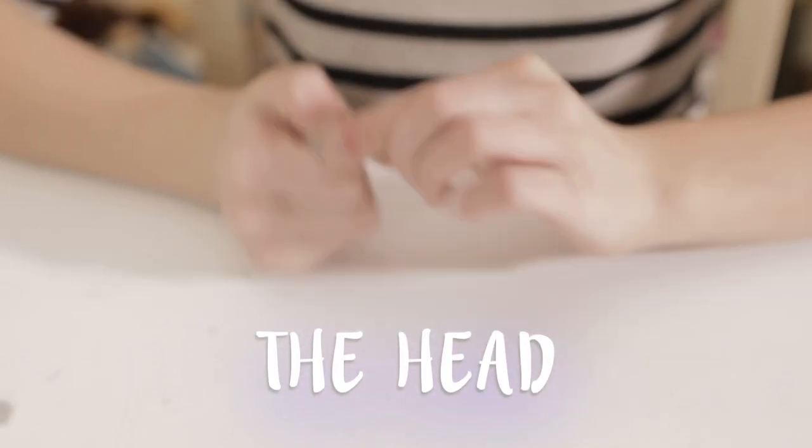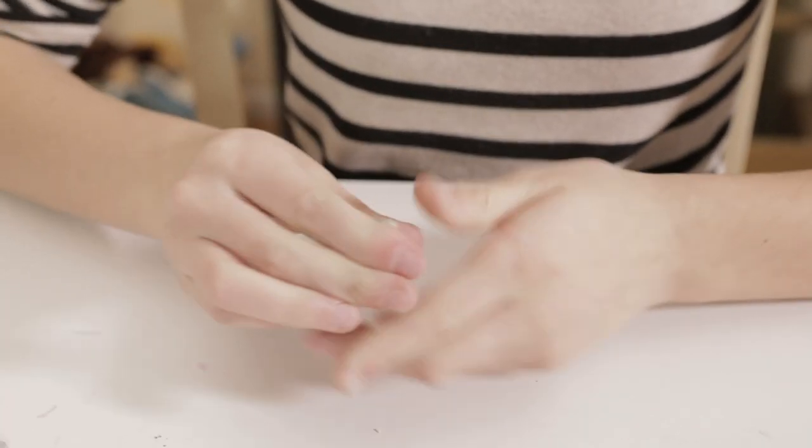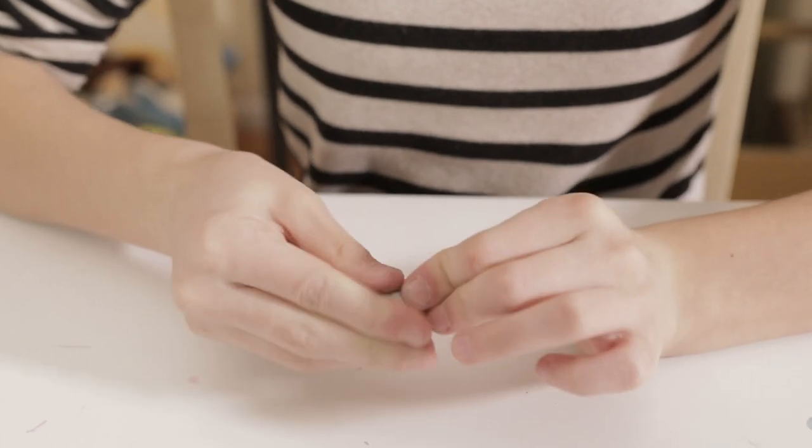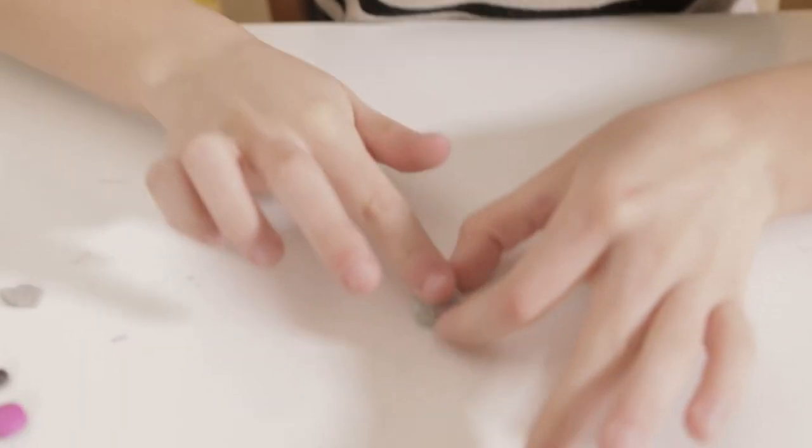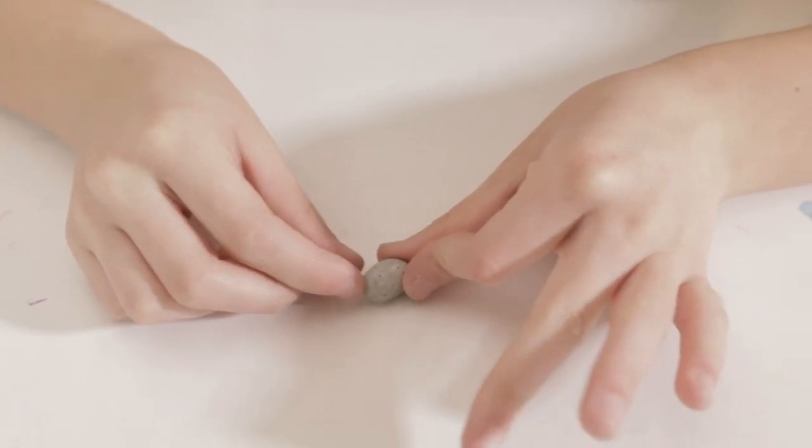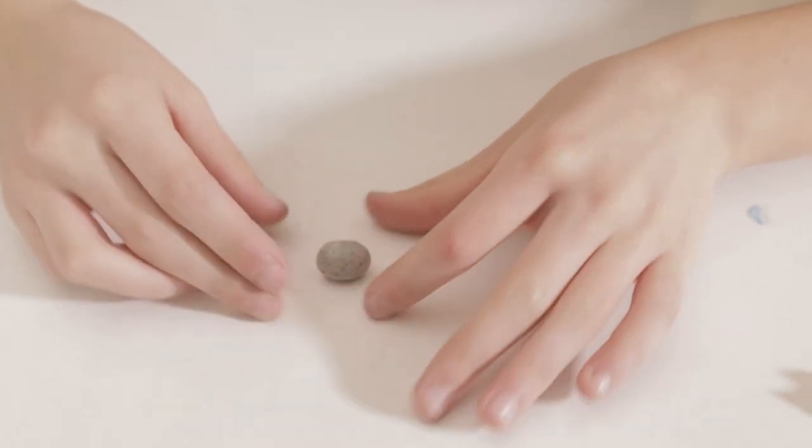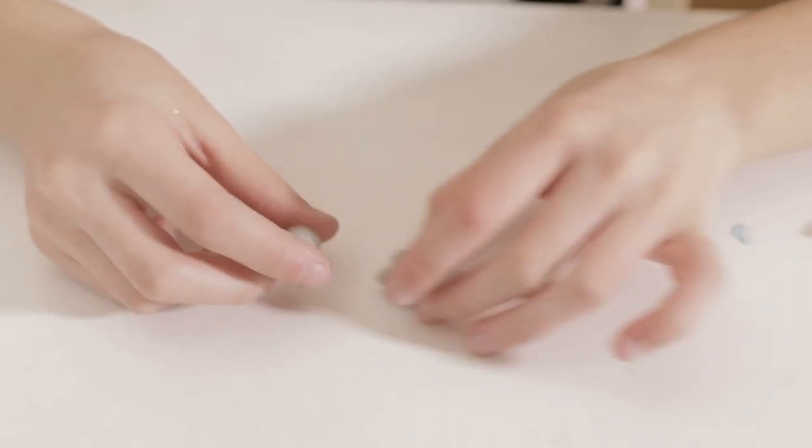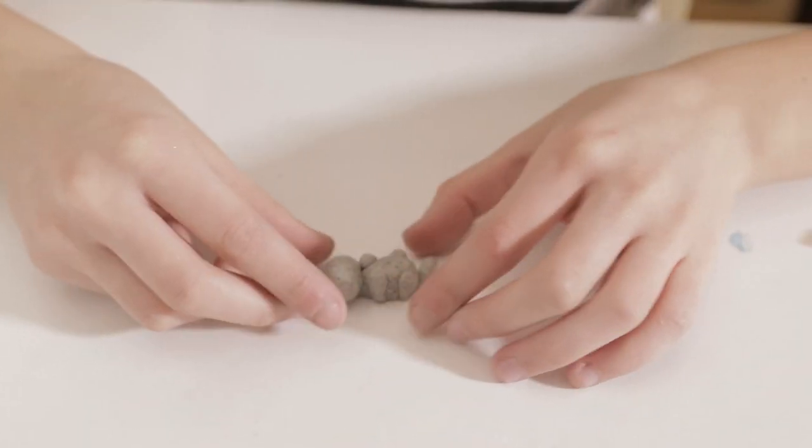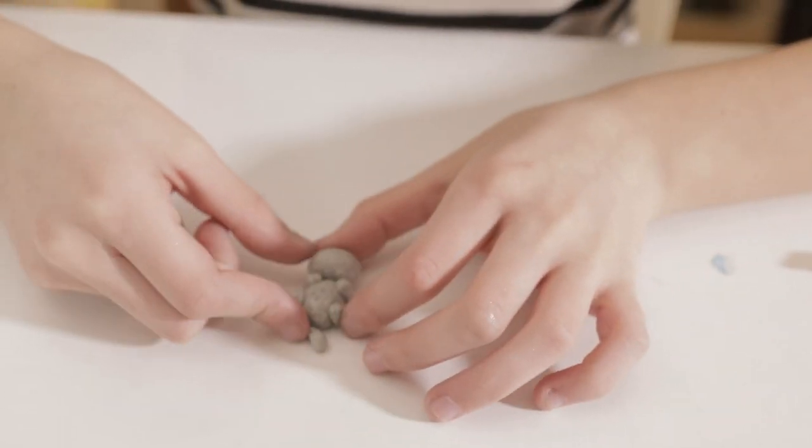Now, let's make the head. Grab your clay and you're going to roll a ball, but make it kind of like an egg. Again, make sure you measure it with the body. Looks like a nice size to me.